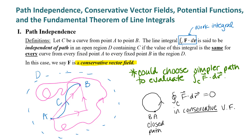I used some notation here that I don't think I've used before. When I put a little circle on the line integral sign, that is to emphasize that the curve must be closed — its starting point and ending point are the same point. So it would be really handy to know if you're working in a conservative vector field: you could choose a simpler path from point A to point B, or if you have a closed path in a conservative vector field, your work integral is zero and you can just move on.